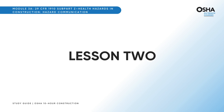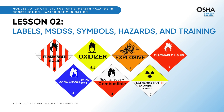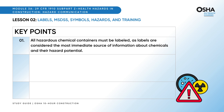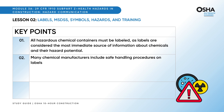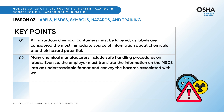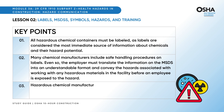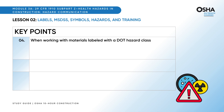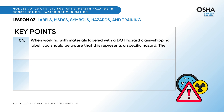Let's move to the second lesson: Labels, MSDSs, Symbols, Hazards, and Training. The key points are: All hazardous chemical containers must be labeled, as labels are considered the most immediate source of information about chemicals and their hazard potential. Many chemical manufacturers include safe handling procedures on labels; even so, the employer must translate the MSDS information into an understandable format and convey the hazards associated with working with any hazardous materials before an employee is exposed to the hazard. Hazardous chemical manufacturers or importers must update MSDSs within three months of discovering new important information about chemical hazards. When working with materials labeled with a DOT hazard class shipping label, be aware that this represents a specific hazard, and the material's MSDS provides information regarding particular hazards denoted by DOT labels.